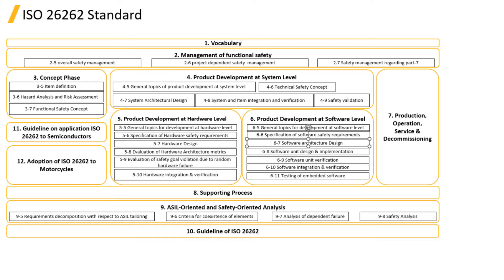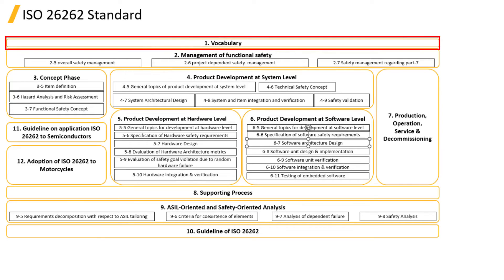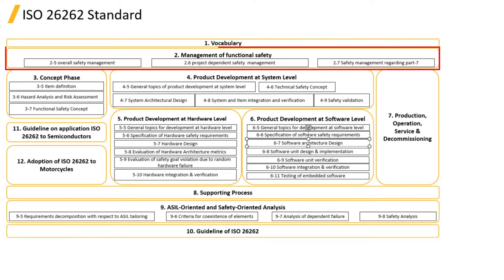The ISO 26262-2018 standard is divided into 12 parts, each serving a specific purpose. Part 1 provides definitions for various terminologies used in functional safety workflow. Part 2 focuses on managing functional safety projects, clarifying the roles and responsibilities of project managers, safety managers, and safety teams.